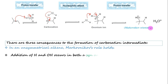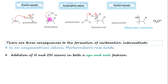Second consequence: the addition of H and OH can occur in both syn and anti fashion. This is because the intermediate is a carbocation, which is a planar structure. After the addition of hydrogen, the water molecule can attack from both the top and bottom side — that is, from the same side as the hydrogen was added, or from the opposite side.